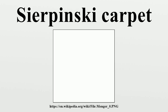Brownian motion on the Sierpinski carpet has attracted interest in recent years. Martin Barlow and Richard Bass have shown that a random walk on the Sierpinski carpet diffuses at a slower rate than an unrestricted random walk in the plane. The latter reaches a mean distance proportional to N^(1/2) after N steps, but the random walk on the discrete Sierpinski carpet reaches only a mean distance proportional to N^(1/β) for some β greater than 2. They also showed that this random walk satisfies stronger large deviation inequalities and the elliptic Harnack inequality without satisfying the parabolic one — the existence of such an example had been an open problem for many years.